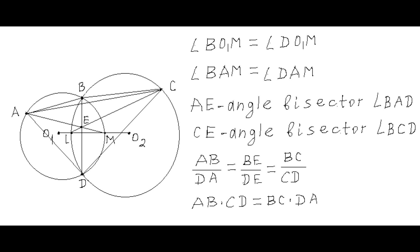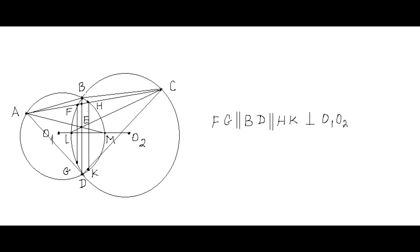Since the two central angles BO1M and DO1M are equal, the corresponding inscribed angles BAM and DAM are also equal. Therefore, AE and analogously CE are the angle bisectors of angles BAD and BCD respectively. Since they intersect at point E on diagonal BD, by the well-known theorem about angle bisectors, the quadrilateral ABCD constructed this way has the property AB times CD equals BC times DA, as required by this problem.